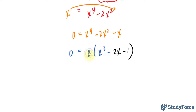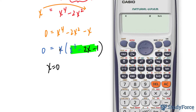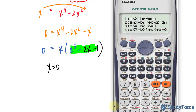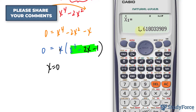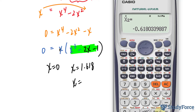Notice that one of our fixed points, given that x has been factored out, is x equals 0. The remaining factor is a cubic. Rather than solving the cubic by hand, I'll use my calculator. There's a function on the calculator which enables us to solve cubics. We substitute the coefficients: x cubed coefficient is 1, no x squared term so 0, then negative 2 and negative 1. We get fixed points at approximately 1.618, negative 0.618, and negative 1. A visual is shown on screen.